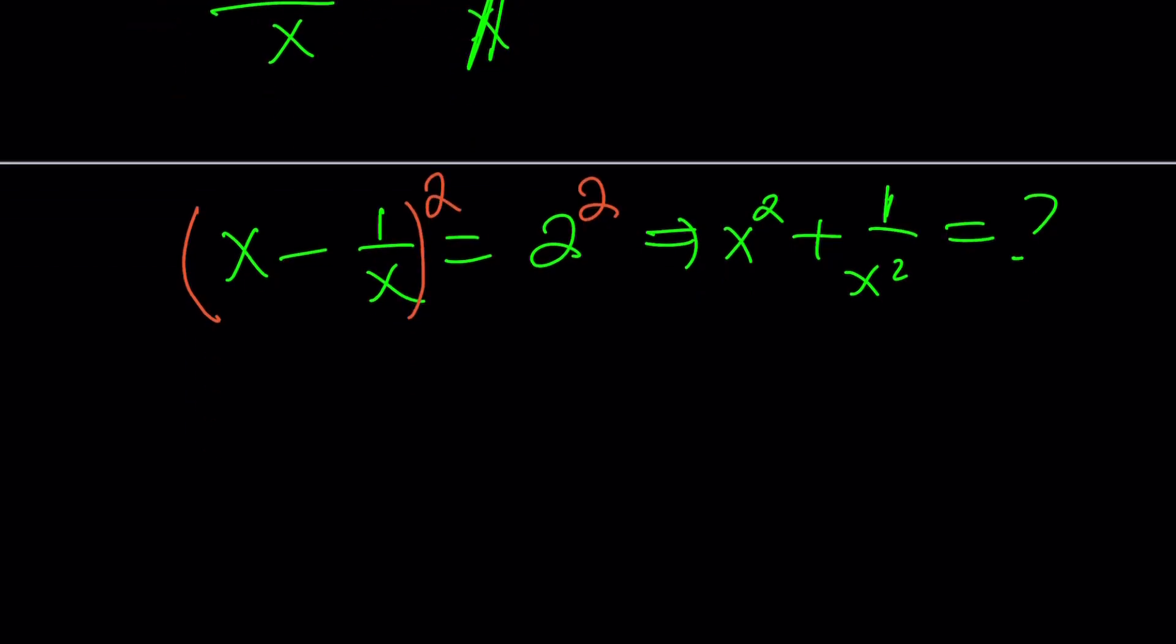If you square this expression, which is special, x squared minus 2 times x times 1 over x plus 1 over x squared equals 4. These two terms cancel out.